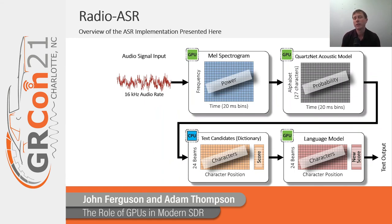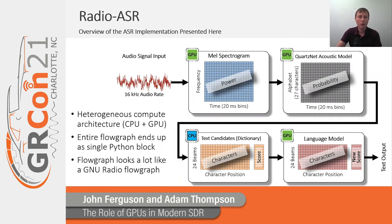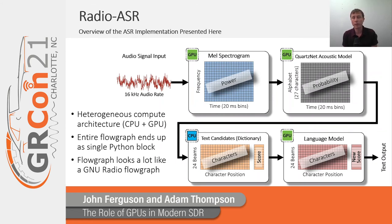Finally, you send those 24 beams to a language model — a neural network executed on the GPU — and rescore them. From the text candidate section, each beam had a probability of how accurate we think it is; you rescore those with the language model, and output the most probable beam. A few things to note: this is a heterogeneous compute problem — we're going CPU and GPU, transferring memory throughout. The entire flow ends up as a single Python block in GNU Radio, implemented as standalone Python code that's called from GNU Radio. But it really looks a lot like a GNU Radio flow graph. In an ideal world, we could make each of these independent GNU Radio blocks and move memory between them — hopefully something achievable in a future version of GNU Radio.